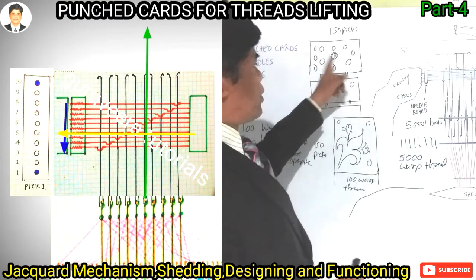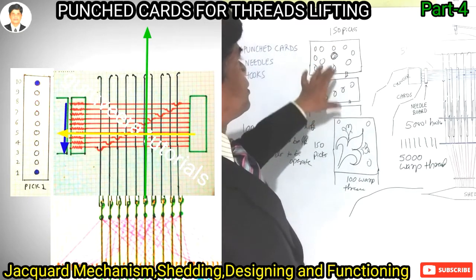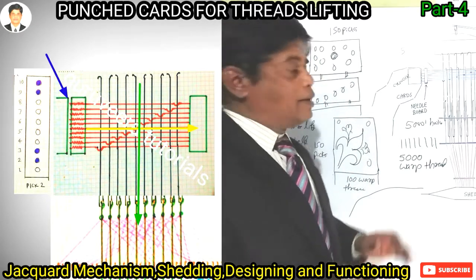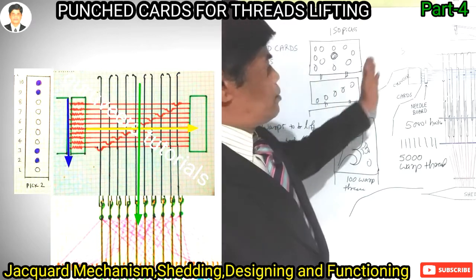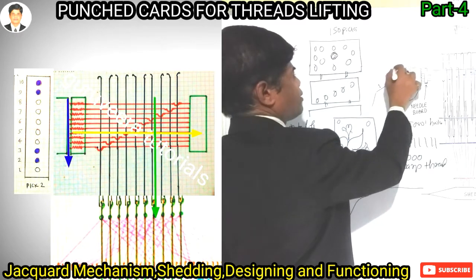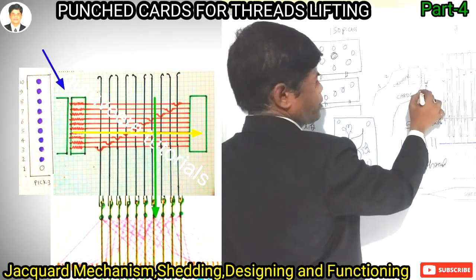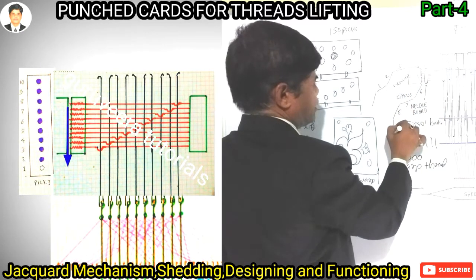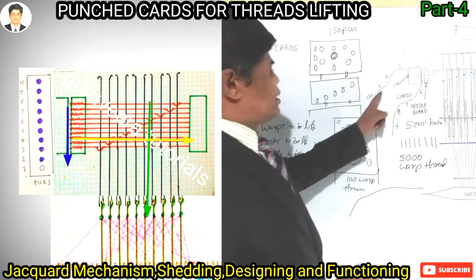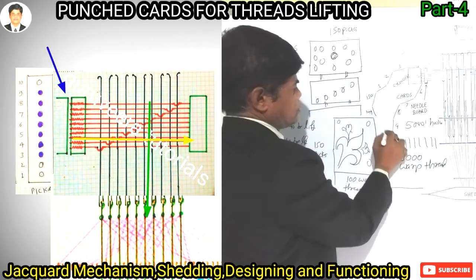For one pick, a chain of cards will be there. For 150 picks, 150 cards are linked together and moving. This is the first card, second card, fourth, fifth, sixth, seventh, eighth, ninth, tenth — up to the 150th card, then back to the first card, and so on.